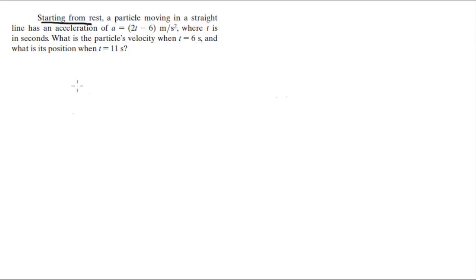A particle moving in a straight line has an acceleration of a equals 2t minus 6 meters per second squared, where t is in seconds. Find the particle's velocity at t equals 6 and its position at t equals 11.